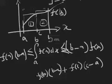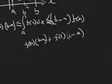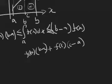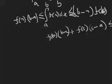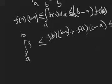This sum is smaller than the area of the full rectangle, which is f of b times (b minus a). But this sum is bigger than the integral from a to b of f of x dx.